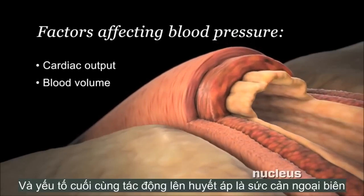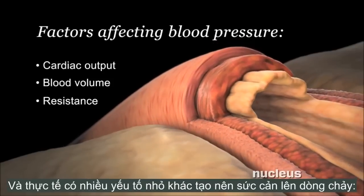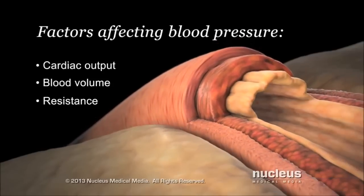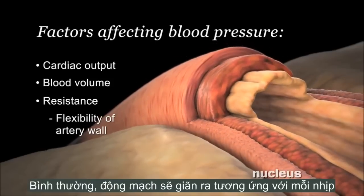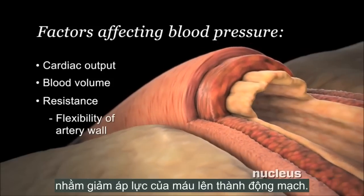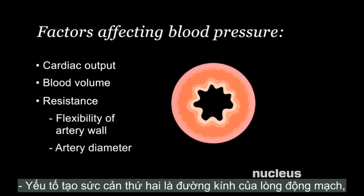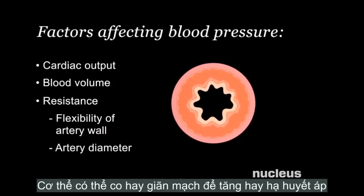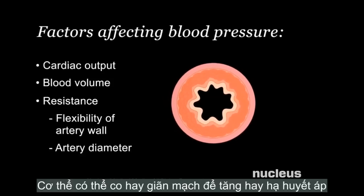The third factor that affects your blood pressure is resistance, which is anything working against the blood flow through your arteries. Several factors contribute to resistance. One resistance factor is the flexibility of your artery wall — healthy arteries expand with each heartbeat to help reduce blood pressure on the wall. Another resistance factor is the diameter of your arteries; your body is able to increase the diameter to lower your blood pressure, or reduce the diameter to raise it.